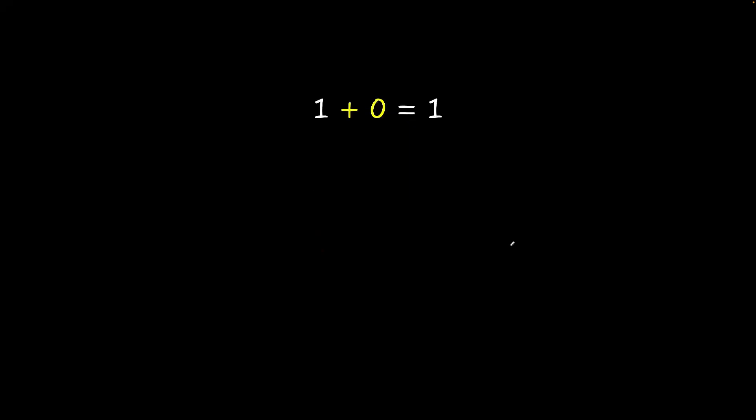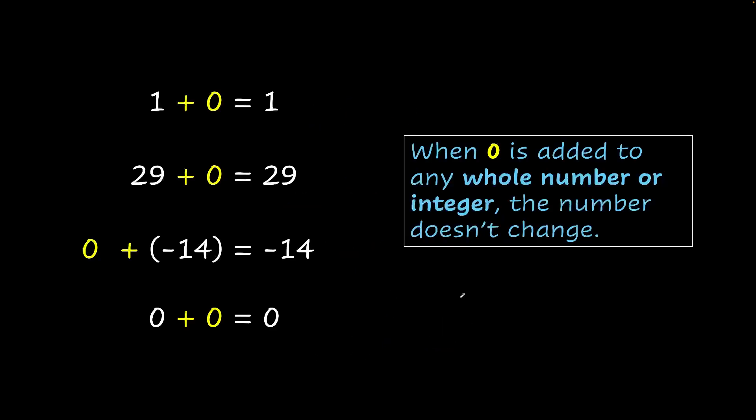And the same applies if you added 1 or 29 or minus 14 or to 0 itself, all these numbers remain exactly the same as they were before. So when 0 is added to any whole number or integer, the number doesn't change.